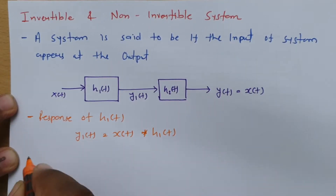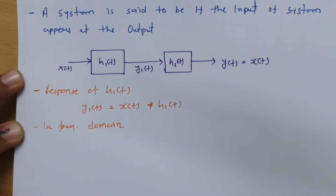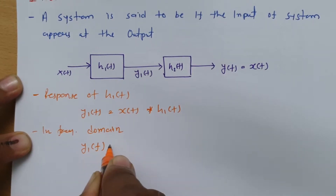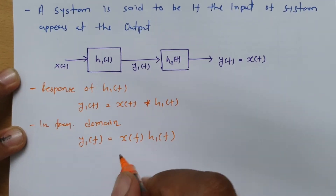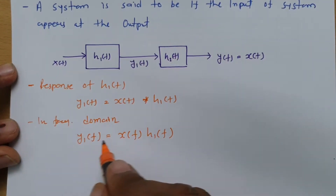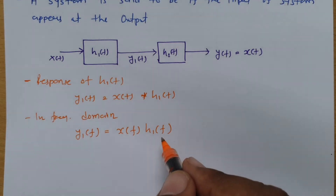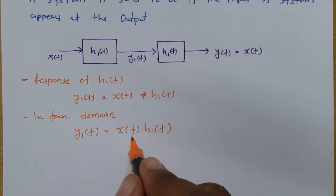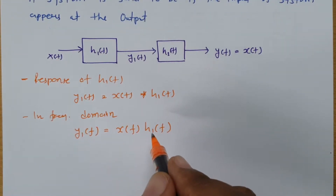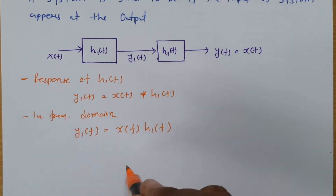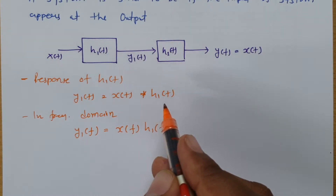In the frequency domain, we can write Y1(t) = X(t) · H1(t). There are other domain representations as well. In the s-domain: Y1(s) = X(s) · H1(s). In the z-transform: Y(z) = X(z) · H1(z). In the Fourier transform: Y1(ω) = X(ω) · H1(ω). So in the frequency domain it is directly multiplication, and in the time domain it is convolution: y1(t) = x(t) * h1(t).